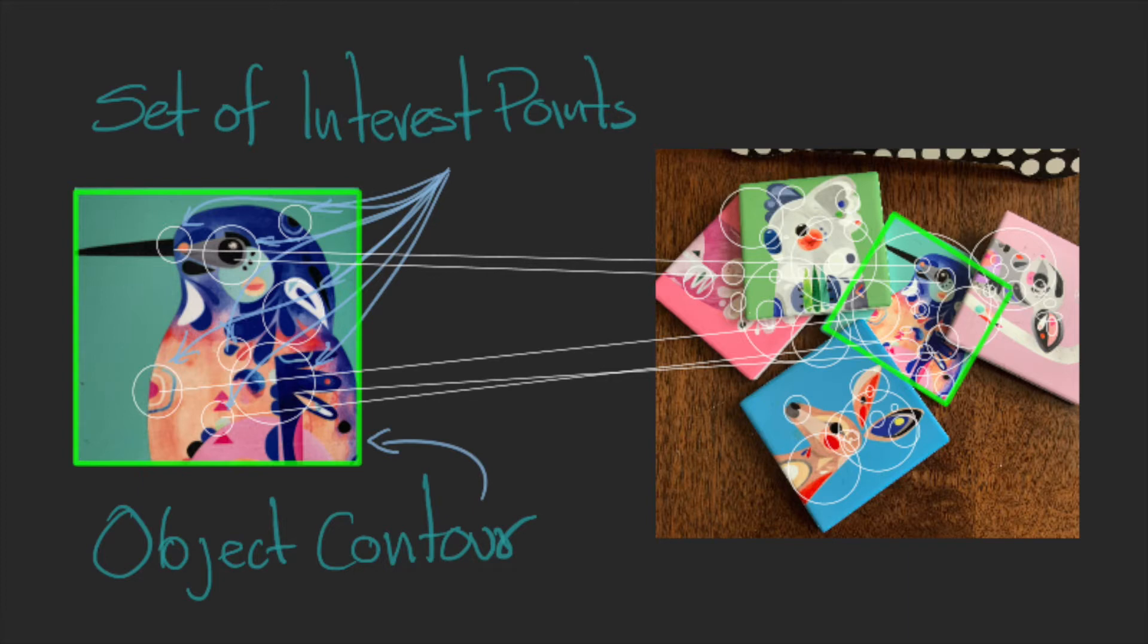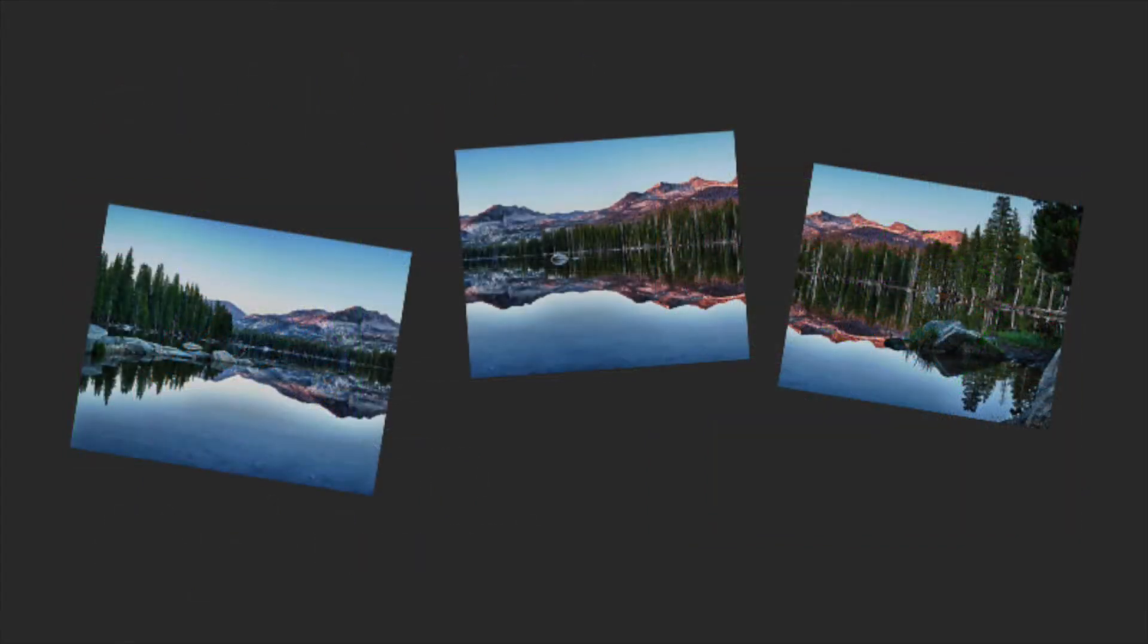We saw this during the lecture on uncalibrated stereo when we used it to calculate the depth map. However, we can also use this information to register two images.